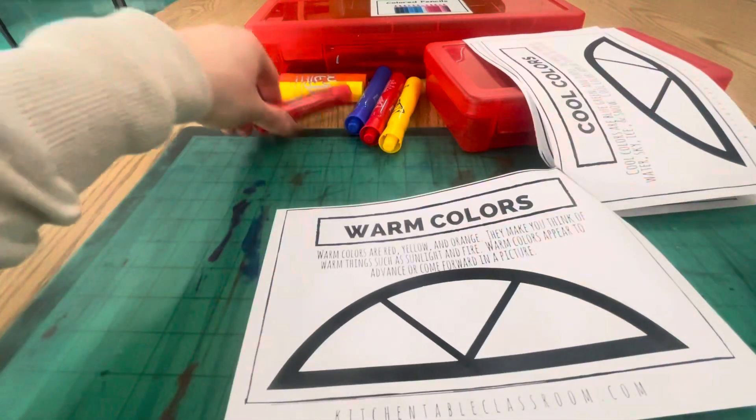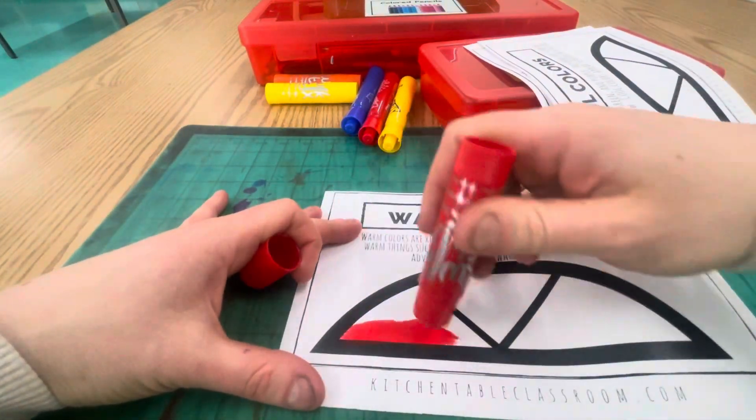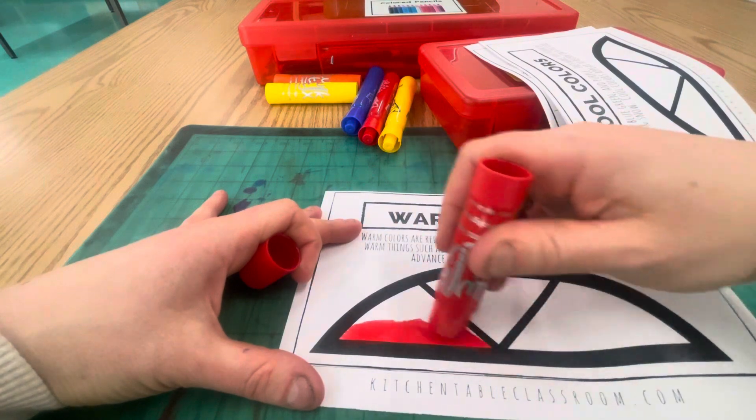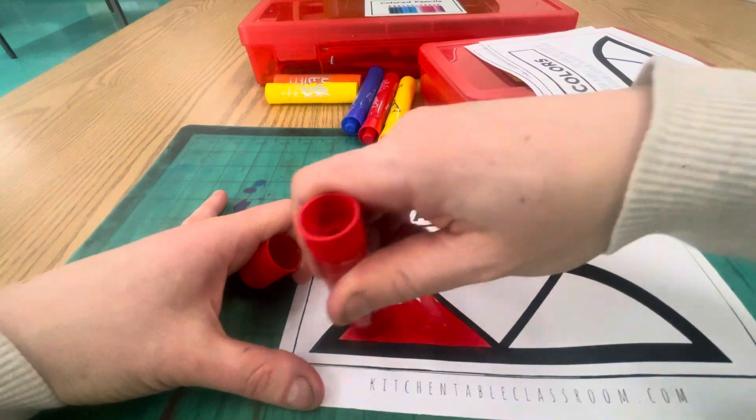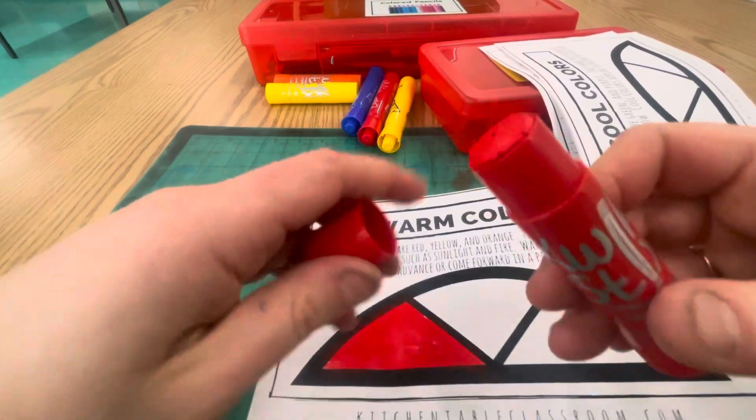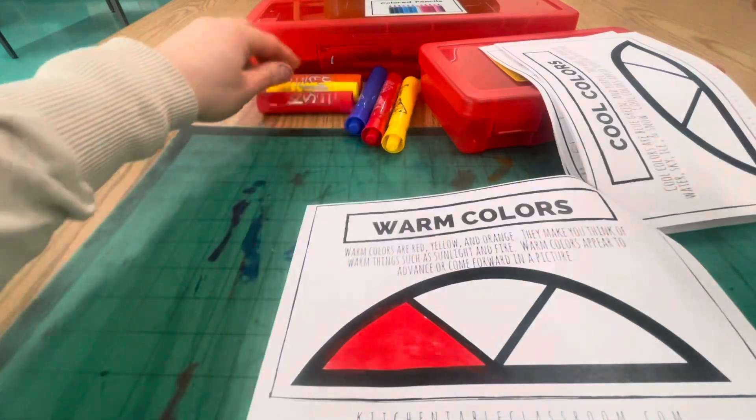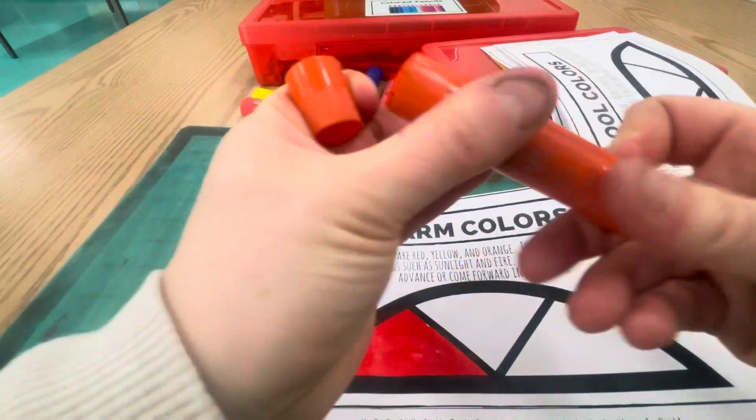If you are going to use the paint sticks, just make sure you're taking really good care of them. This would be a page that would work really well for that. It's a large area that you can stay inside of your lines with. Please make sure they're not rolled up too much before you're putting the cap back on. Make sure you're putting the cap on tight so you hear the click.